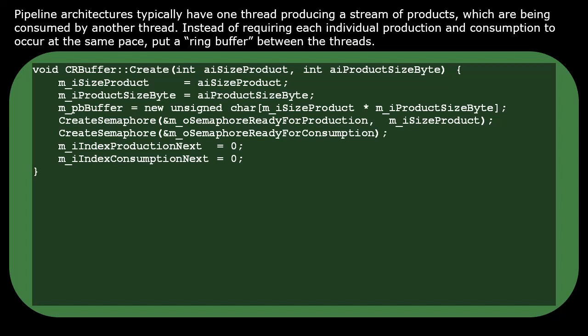For the consumer thread, the meaning of its semaphore's resource is the number of ring buffer slots that have been filled by a product. That semaphore starts out with its count being zero.